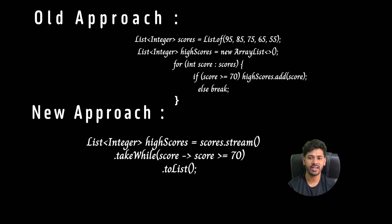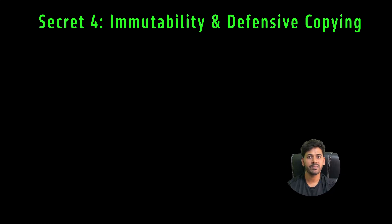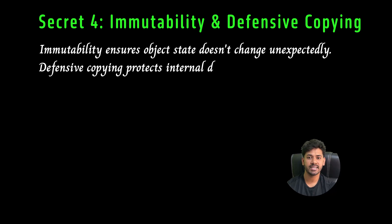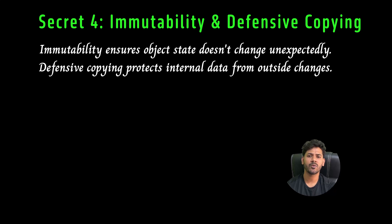takeWhile takes elements until the condition fails. Then apply .toList() to convert the result back to a list. Secret four: Immutability and defensive copying. Immutability ensures an object's state doesn't change unexpectedly, and defensive copying protects internal data from outside changes.